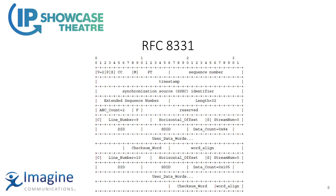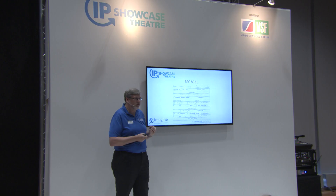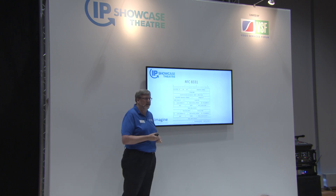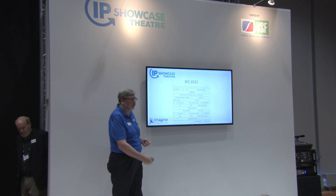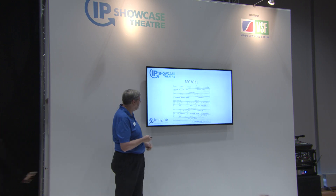Looking at the standard more closely: RFC 8331 defines the packet format. It's an RTP packet with RTP timestamps, and then we have our DID, SDID, ANC services — you can have between 0 and up to 256 services in one packet. When writing the standard, we tried to word-align data structures to make it easier for both hardware and software implementations.